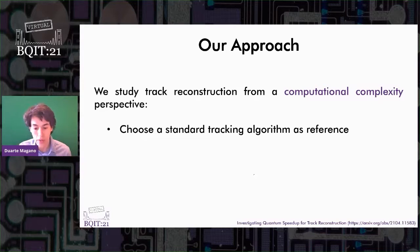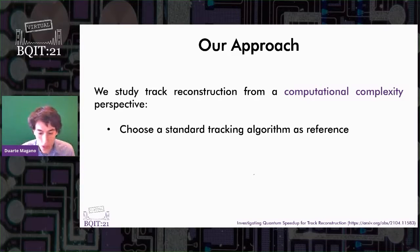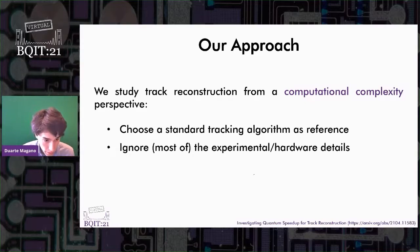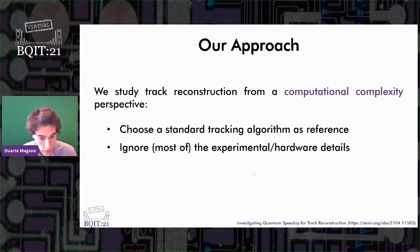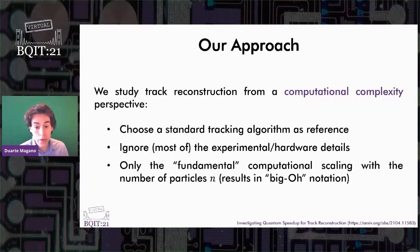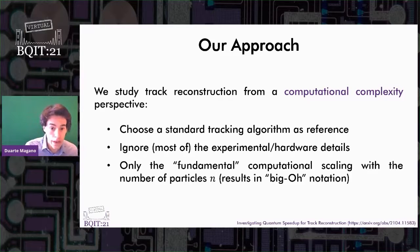Namely, we study track reconstruction from a computational complexity perspective. Our analysis is centered around an algorithm for track reconstruction called the Combinatorial Track Finder, which is a standard algorithm used by the CMS collaboration at CERN. Unlike other works, we do not propose a new tracking algorithm — instead, we study a current one and see if quantum computers could be used to run it faster. We present a simplified model of tracking which ignores most experimental and hardware details to focus on the essential aspects that characterize computational scaling. Our central variable is n, the number of particles produced in an event, and our goal is to find the complexity of the Combinatorial Track Finder in terms of n.